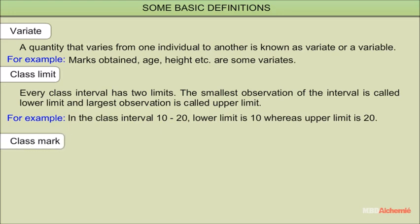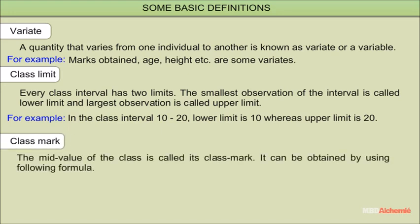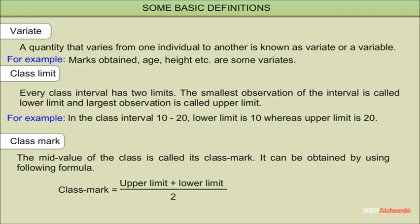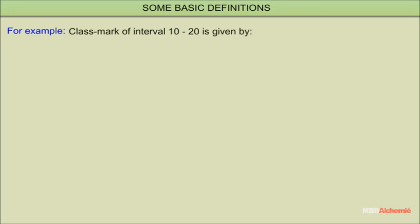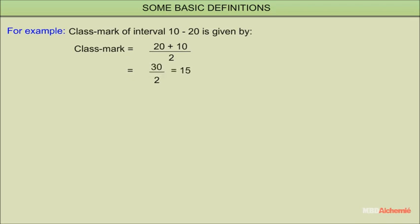Class mark: the mid value of a class is called its class mark. It can be obtained by the formula: class mark = half of (upper limit + lower limit). For example, the class mark of the interval 10 to 20 is equal to half of (20 + 10), which is 15.